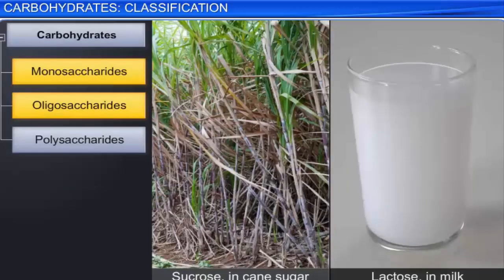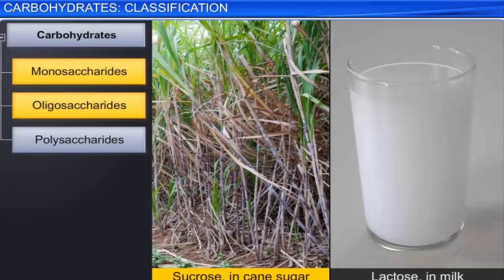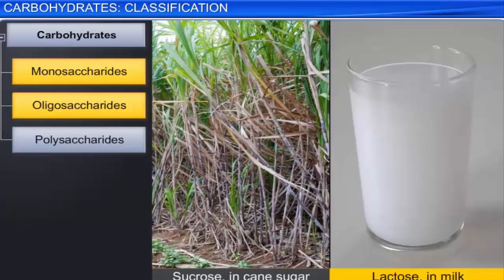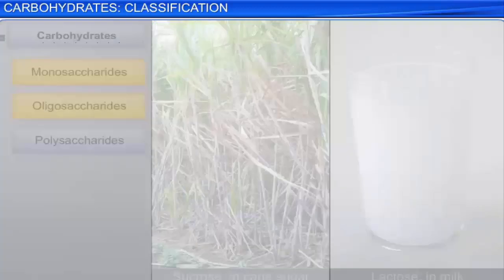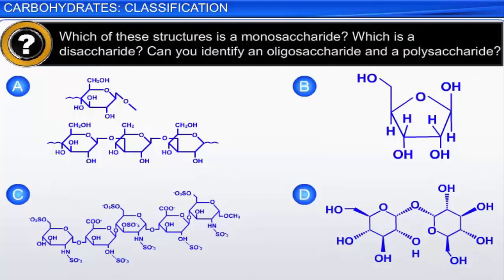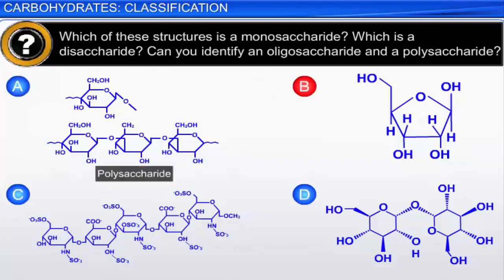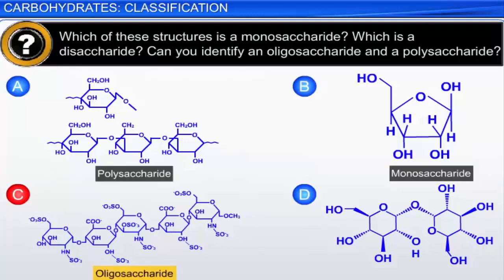Everyday examples of sugars include sucrose, found in cane sugar, and lactose, found in milk. Which of these structures is a monosaccharide? Which is a disaccharide? Can you identify an oligosaccharide and a polysaccharide? Molecule A is a polysaccharide. Molecule B is a monosaccharide. Molecule C is an oligosaccharide. Molecule D is a disaccharide.